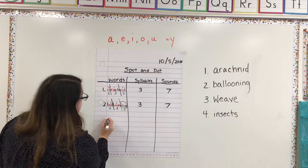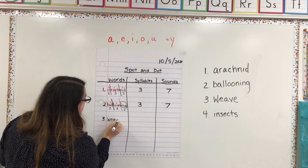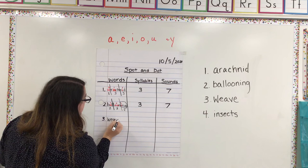So for homework tonight, I want you guys to skip a line. You're gonna write number three, and you're gonna put weave. You're gonna skip a line, put number four, insects. All right? And I want you guys to do all four words tonight. All right, good luck!